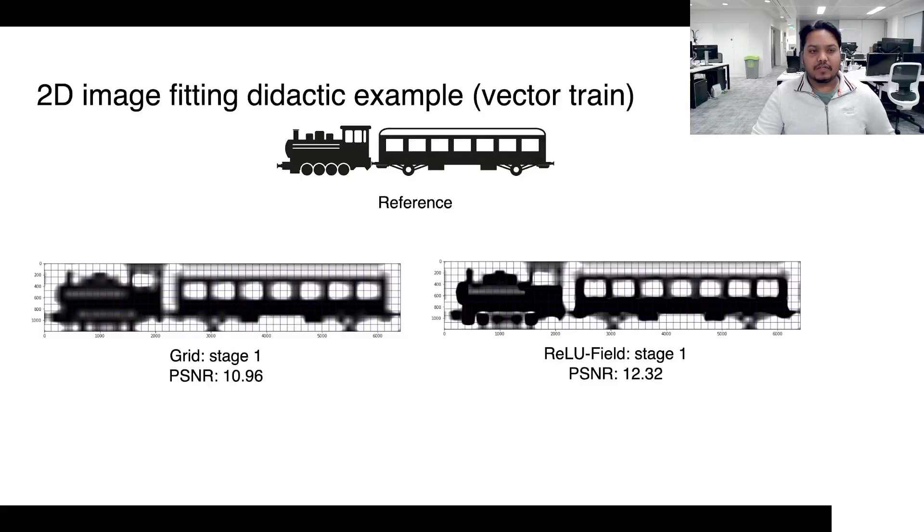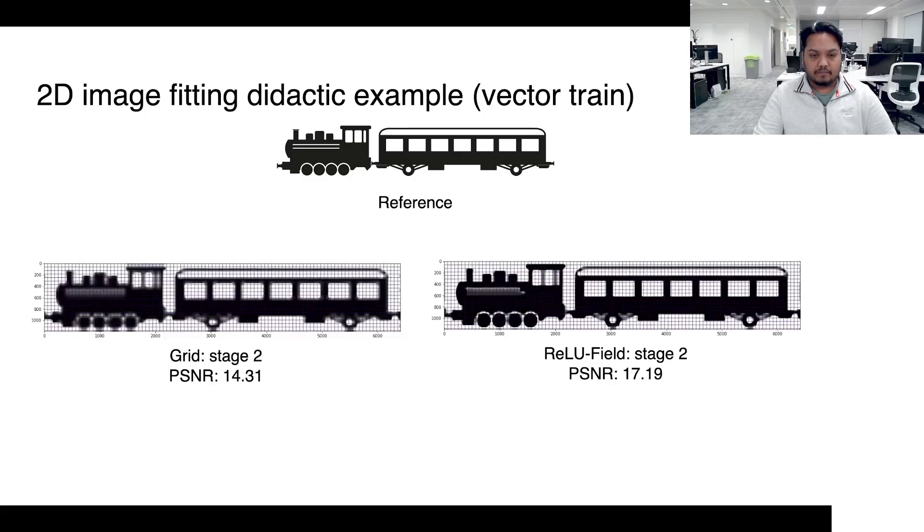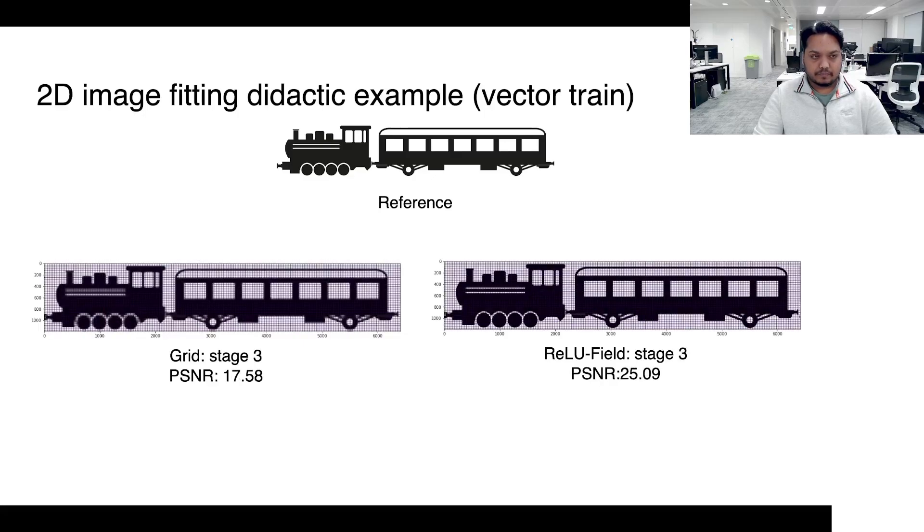We demonstrate this idea also through a more real and concrete example of trying to model a train engine vector art through optimizing a ReLU field. The comparison is made to a traditional bilinearly interpolated grid. As can be seen through the stage-wise training, from a coarse to a final resolution, that at the current stage equals 3, the ReLU field outperforms the bilinear interpolation by a strong margin both in terms of the numerical score and the visual quality.